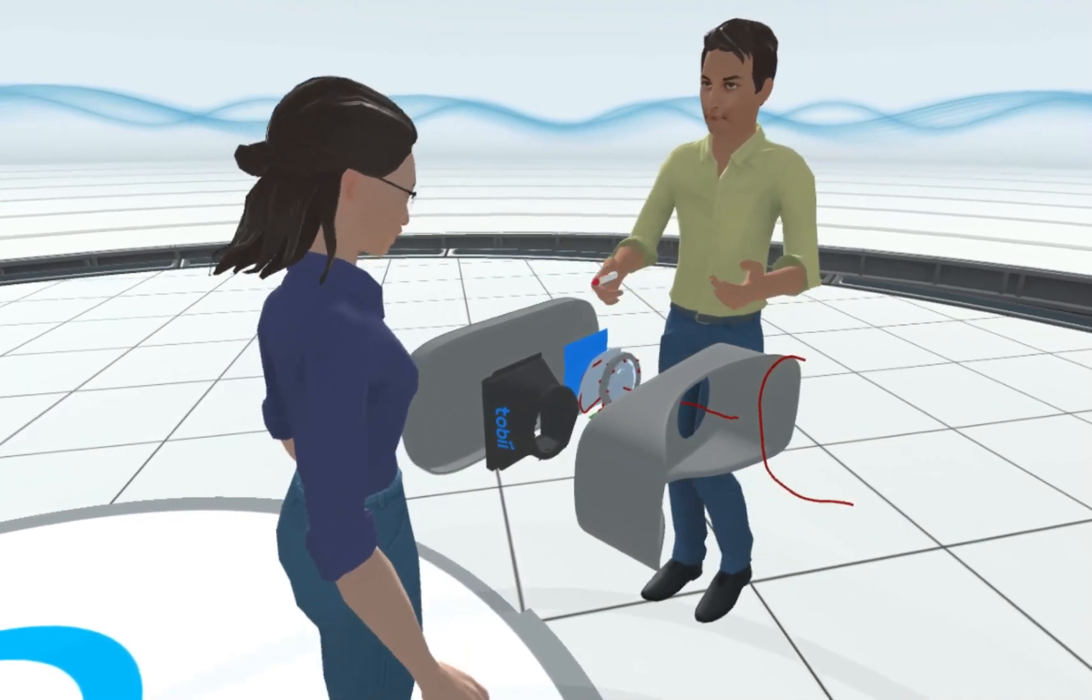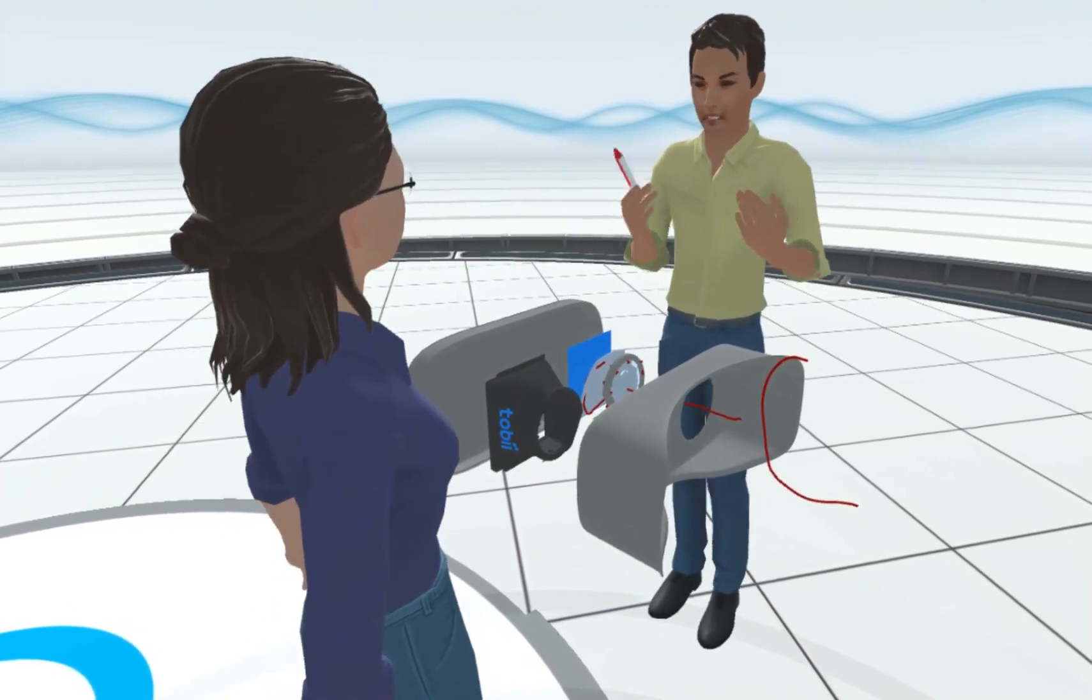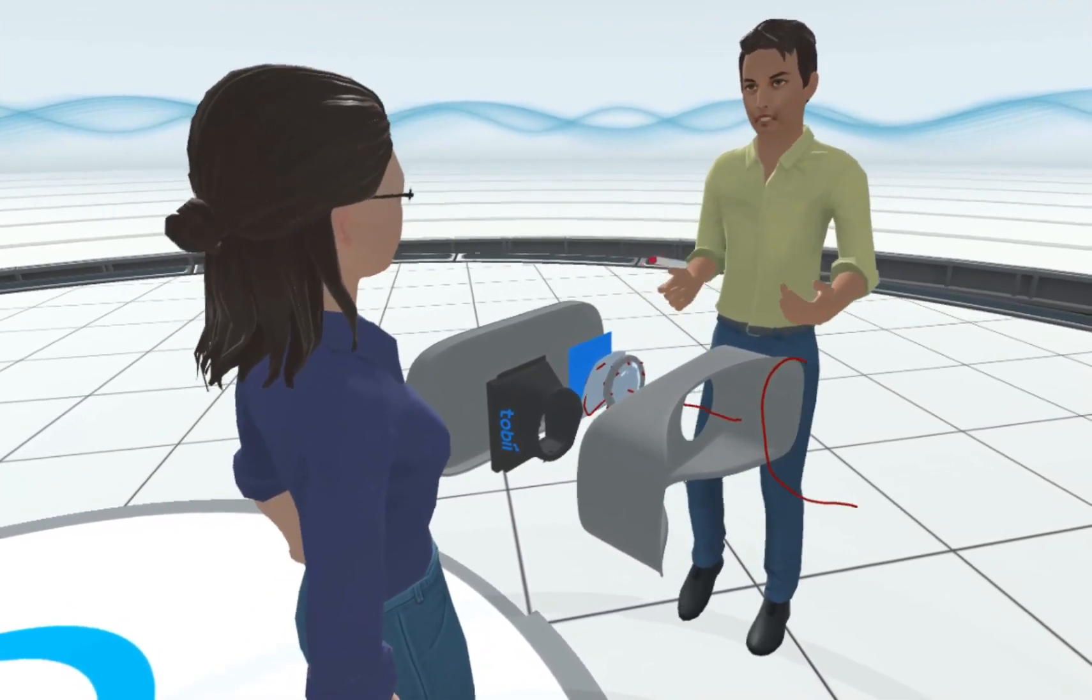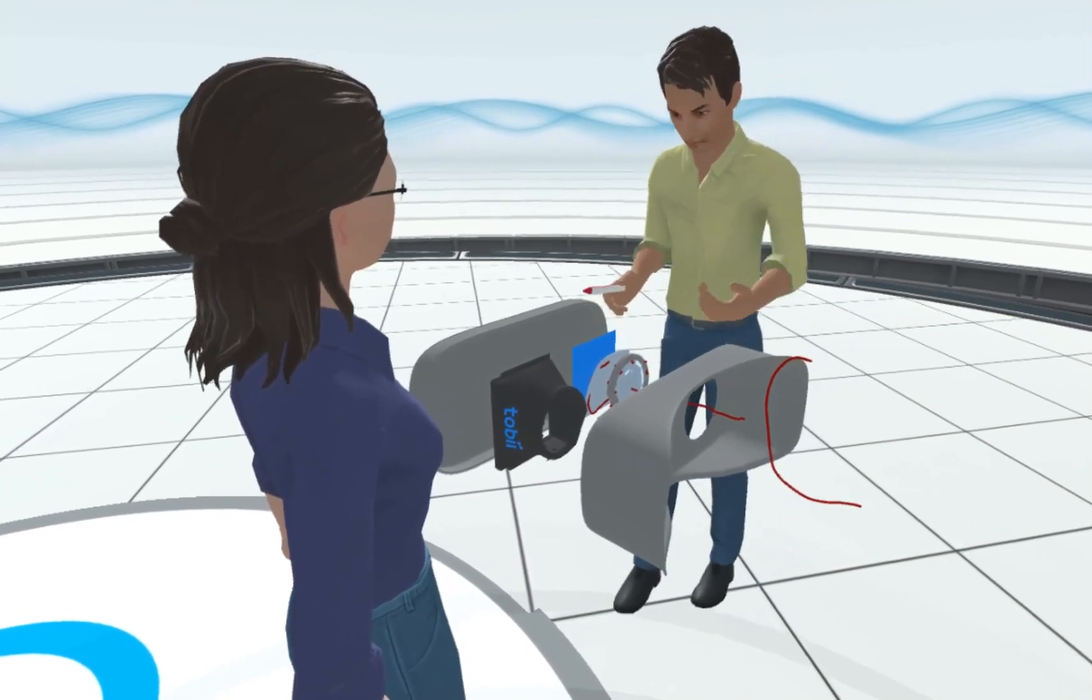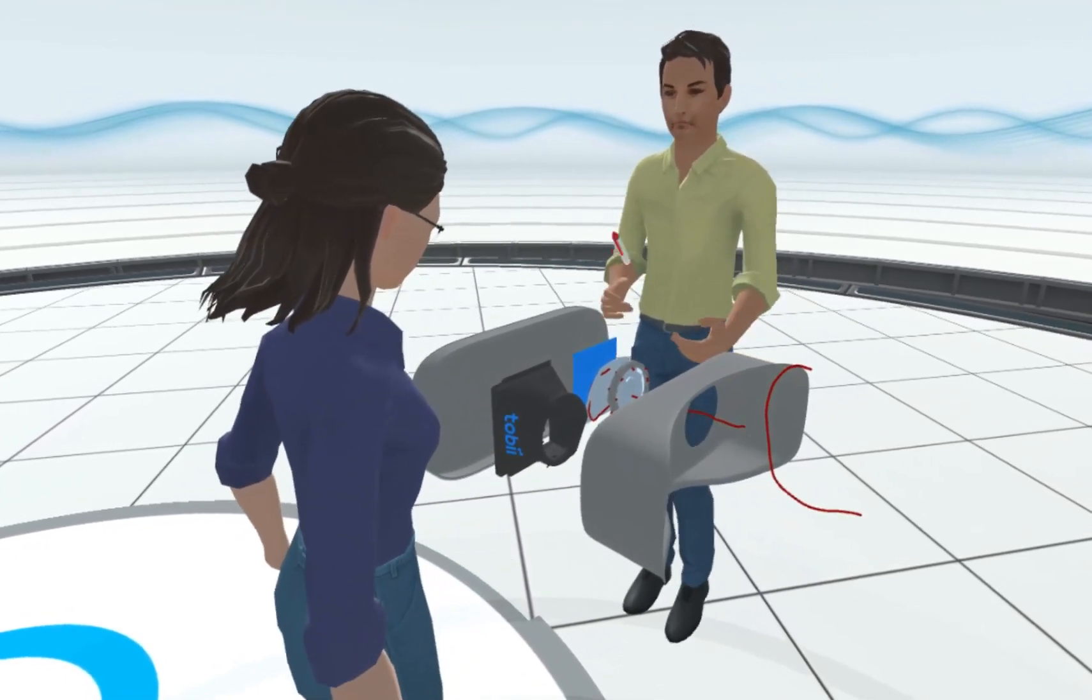And then the camera captures the pictures of the eyes. It sees where they are and how they're directed. And that way the eye tracking knows where you're looking in the headset. So that's how eye tracking works in VR.